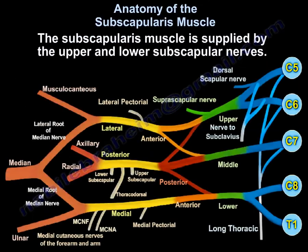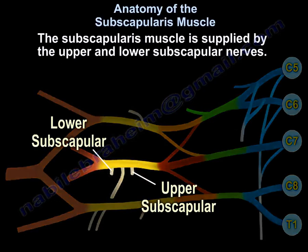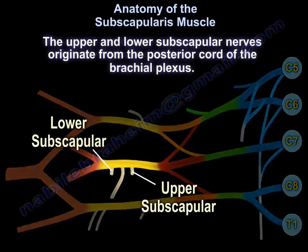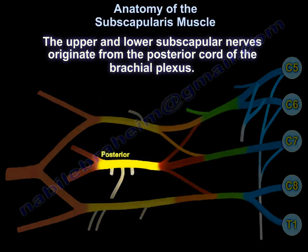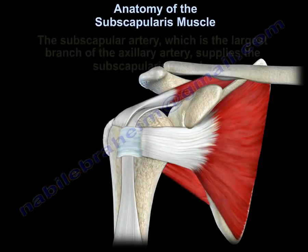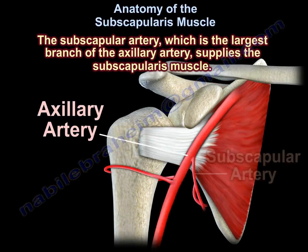The subscapularis muscle is supplied by the upper and lower subscapular nerves, which arise from the posterior cord of the brachial plexus. The subscapular artery, which is the largest branch of the axillary artery, supplies the subscapularis muscle.